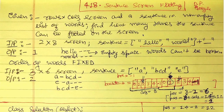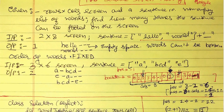The conditions are: first, a word cannot be broken while changing lines. Second, there has to be at least one space between two words — there could be more. Let's say we have a 2×8 screen — two rows and eight columns.